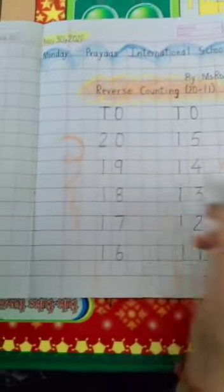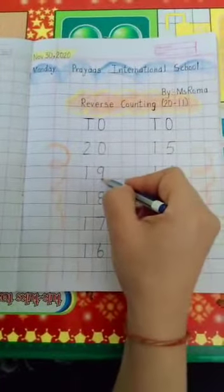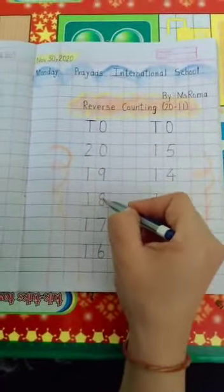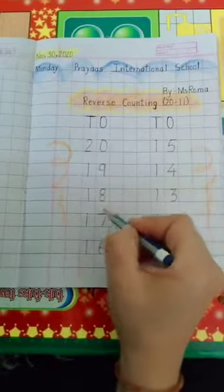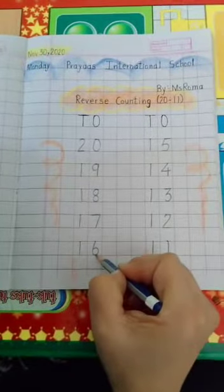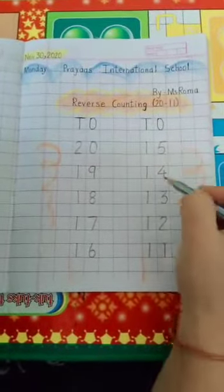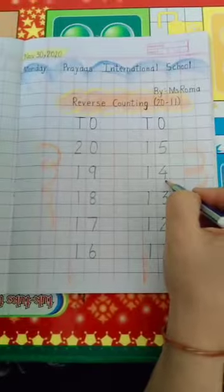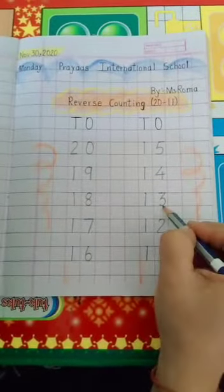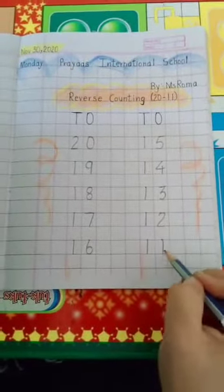So, let's revise it again: 20, 19, 18, 17, 16, 15, 14, 13, 12, and 11.